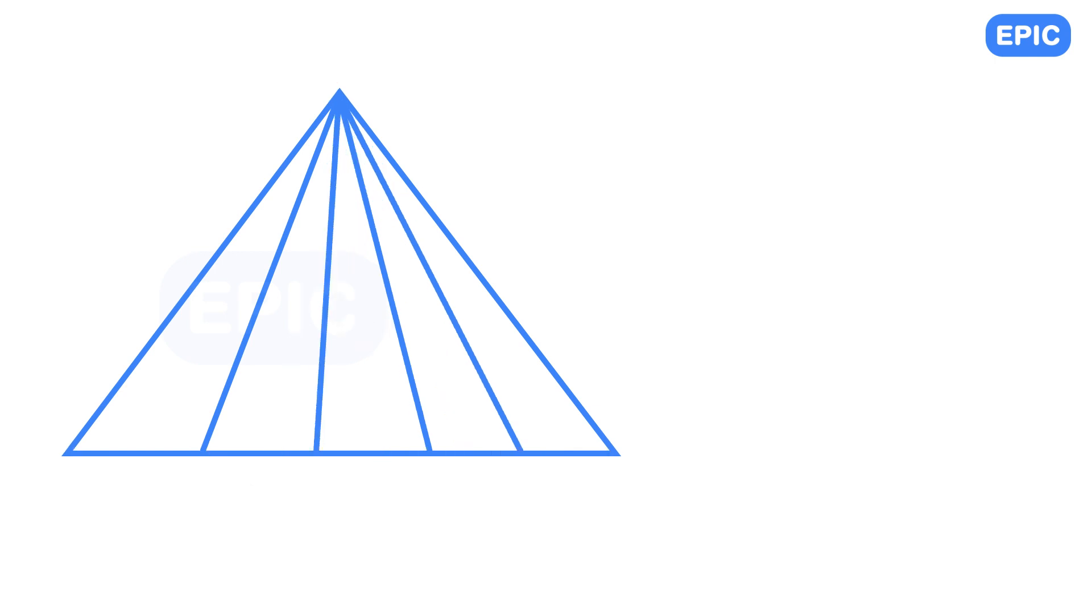What if we have horizontal lines in the triangle as well? Say a 5 base triangle has 4 horizontal lines. Can you count the total number of triangles? Give it a try.